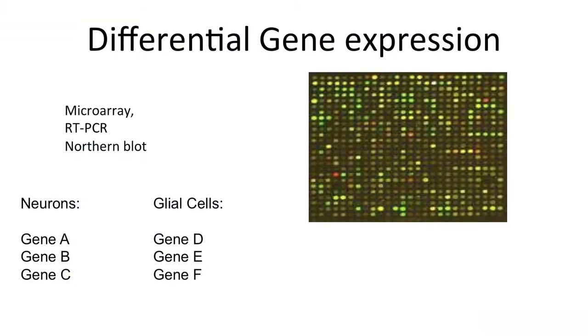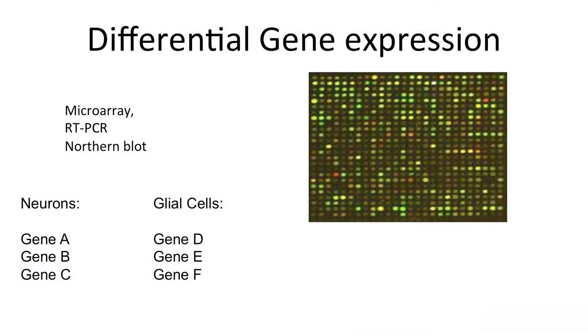One of the ways we study this is through microarrays and gene expression analysis. We've talked about several types — like taking two cell types and just looking at what are the different RNAs actually being expressed. You could do this by northern blot: take a bunch of cells from one cell type, isolate all the mRNA, run it on a gel, probe for certain genes, then take RNA from a different cell type and see if those cells express the same gene. We also talked about microarrays, looking at many different mRNAs at the same time.